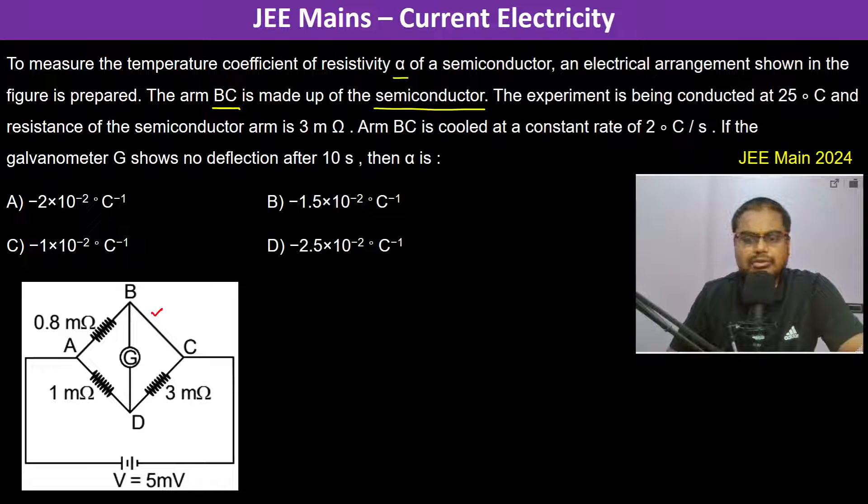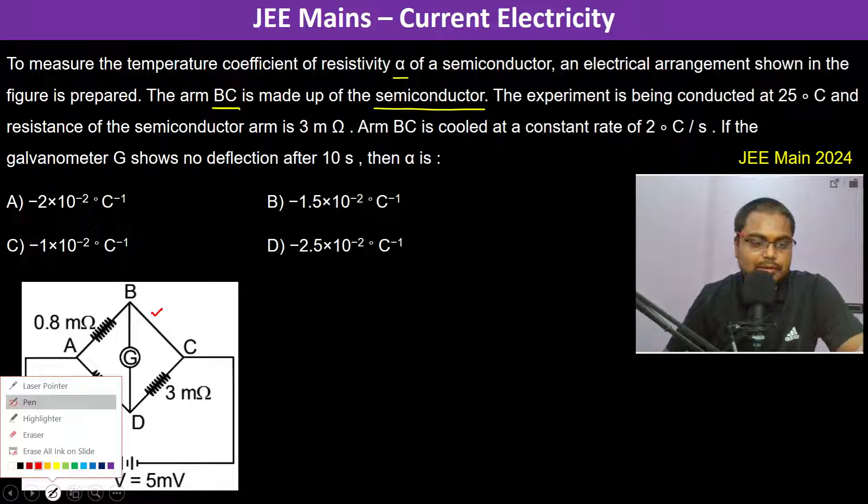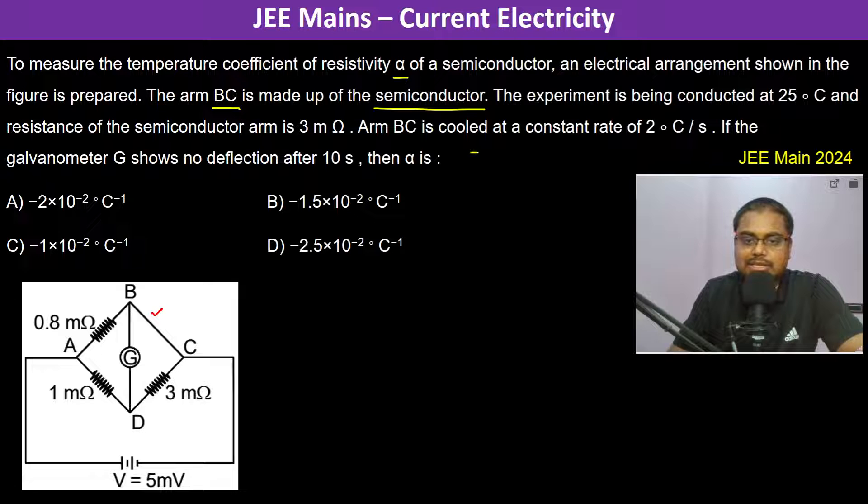The semiconductor property is that when the temperature increases, its resistivity decreases. Therefore, alpha, the temperature coefficient of resistivity, is actually negative. So R is equal to R naught times 1 minus alpha delta T, of course plus we can write.